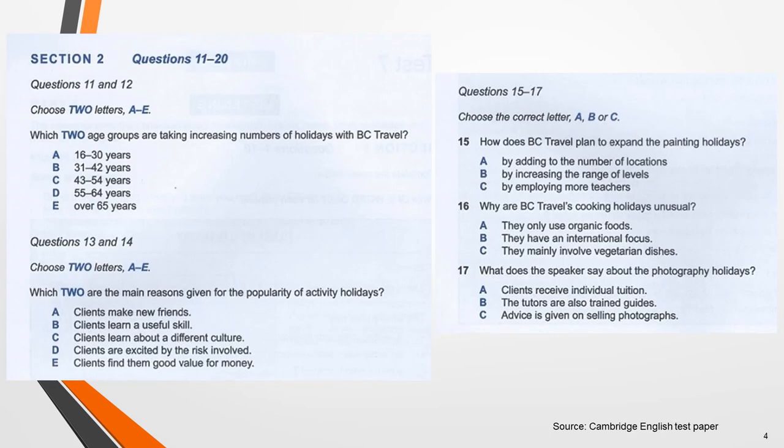Here are examples of both types of multiple choice questions from a past paper. In this case they happen to appear together, but this is not common. Pause the video and study them for a moment. Read the instructions very carefully. The first set of questions — eleven and twelve, and thirteen and fourteen — are list questions. You must choose two answers from answer options A to E for each pair of questions. The second set of questions — fifteen, sixteen, and seventeen — are single questions with three possible answers. You must choose one answer for each from the answers A, B, or C.